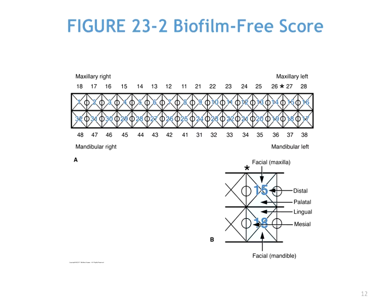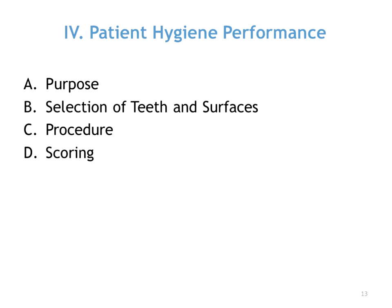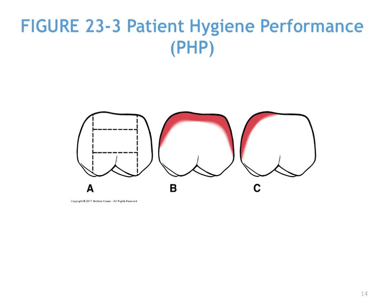Then we have patient hygiene performance, or PHP, which is used to assess the extent of biofilm and debris over a tooth surface. Specific teeth and specific surfaces within those teeth are used. A score of zero is good, while fair or poor scores reflect how much of the tooth surface is covered. You assign a score of zero to five, and the higher the number, the more biofilm is on that tooth.